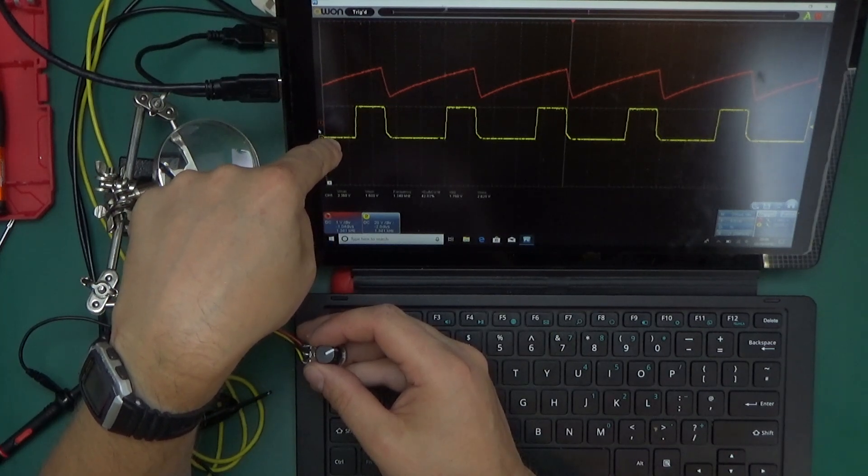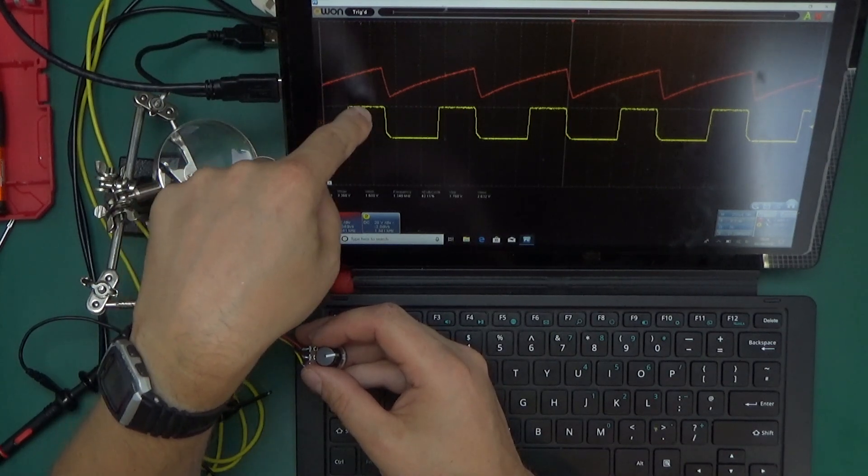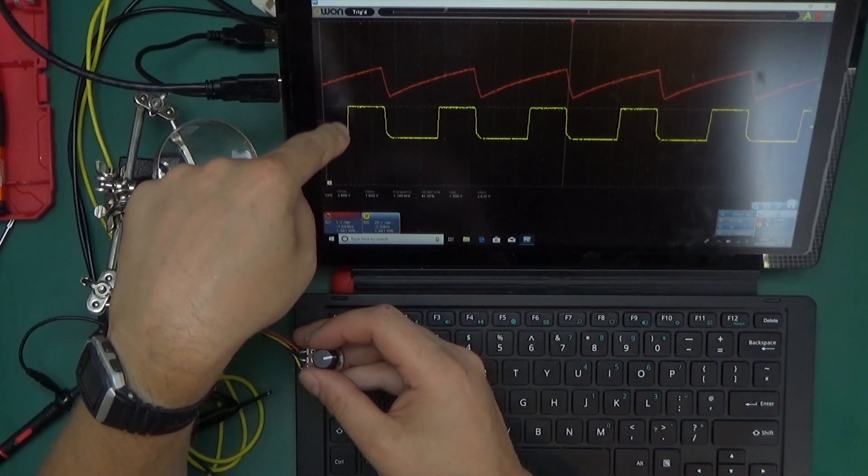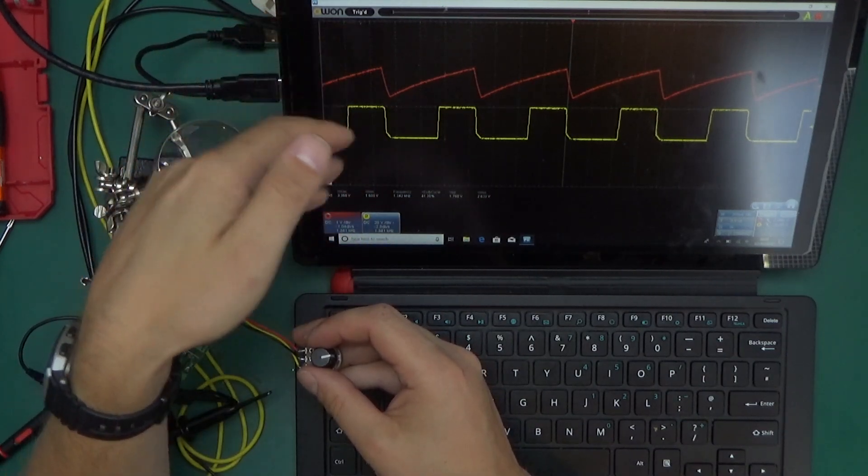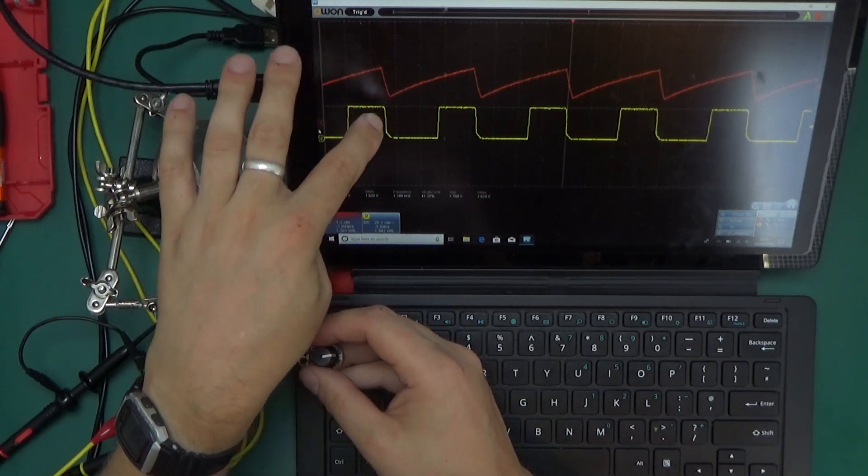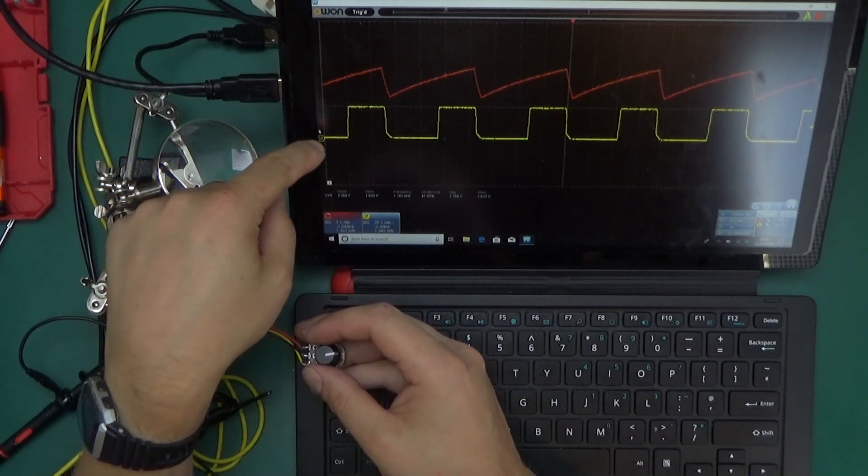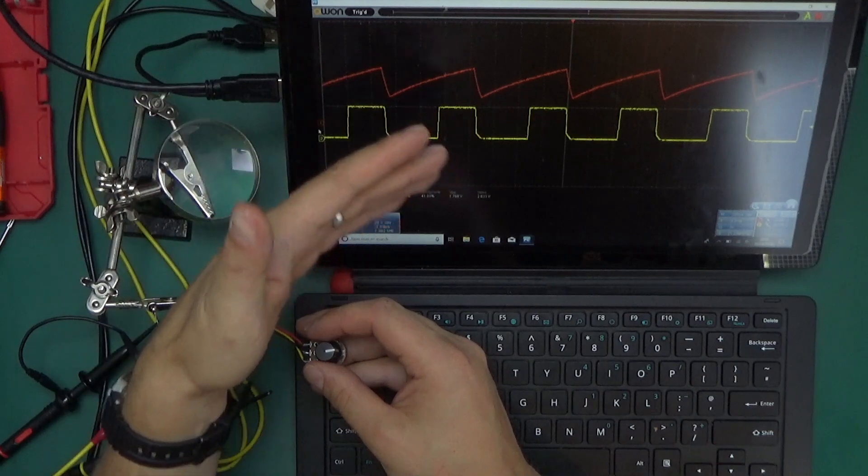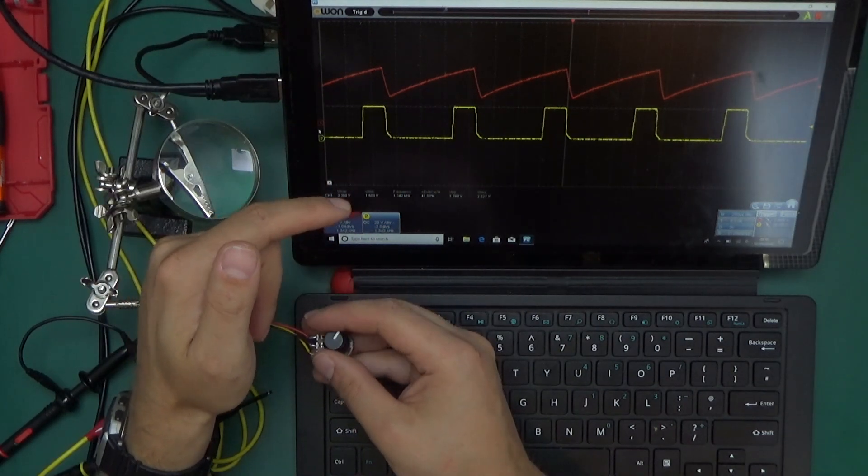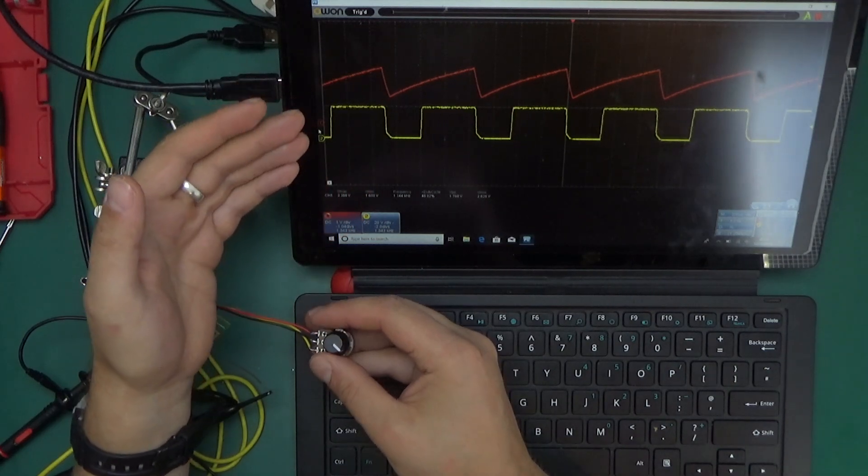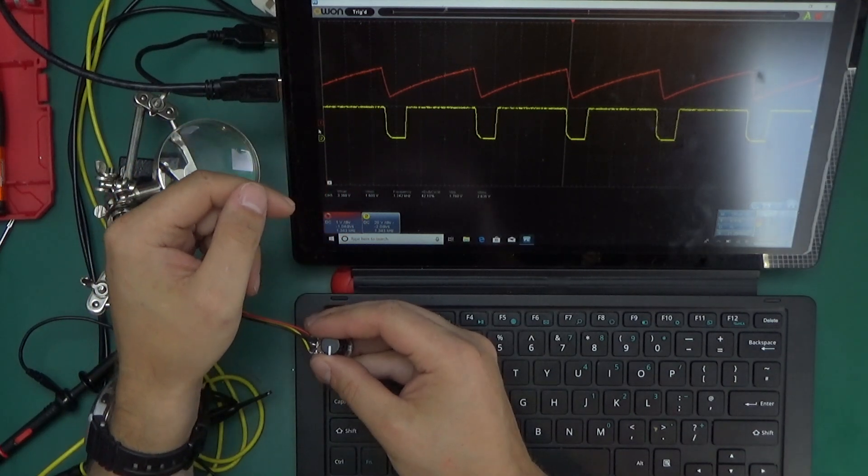So whenever the MOSFET goes from fully off to fully on, or from fully on to fully off, the edge, the rising and the falling edge, this is when the heating happens. But as you can see, this is compared to the rest of the time, it's a very small amount of power. So the average power dissipation in the MOSFET is very, very low. So I hope you enjoyed this little demonstration of PWM and the look inside of the dimmer from Amazon.